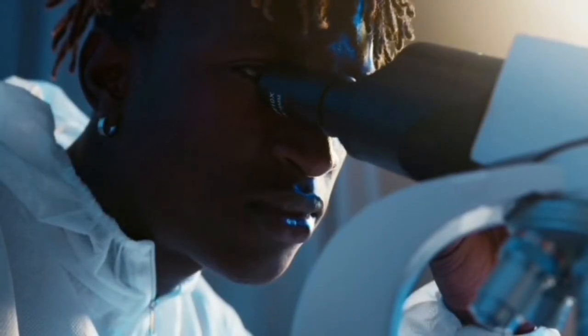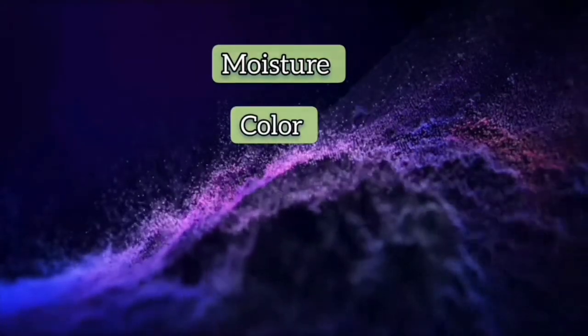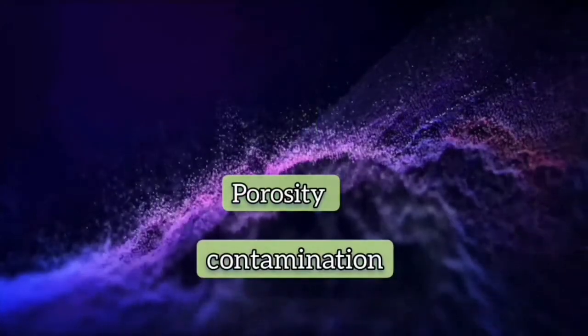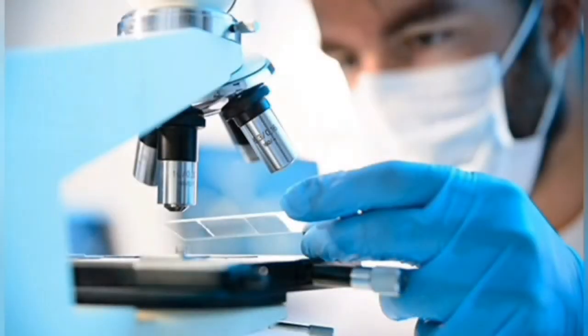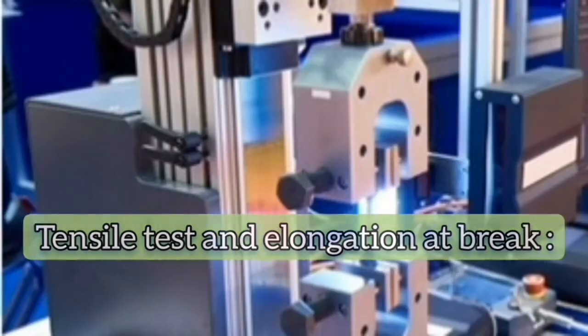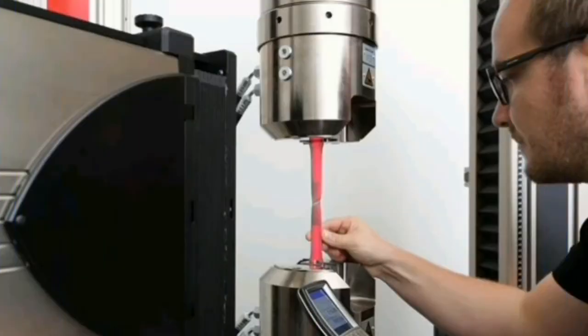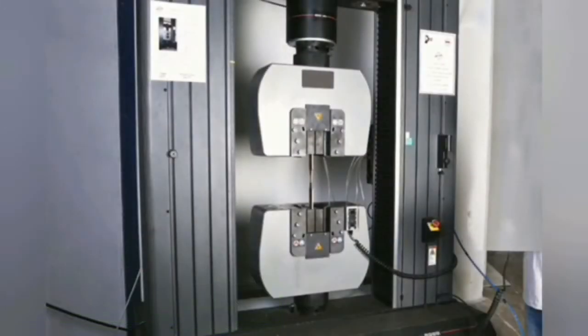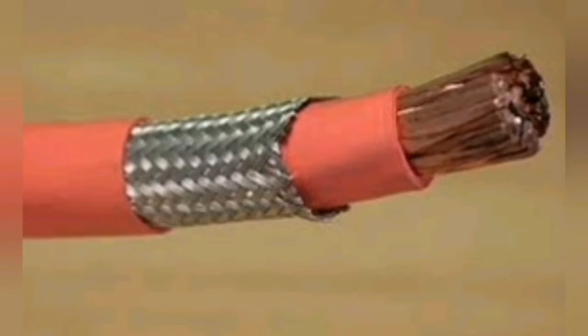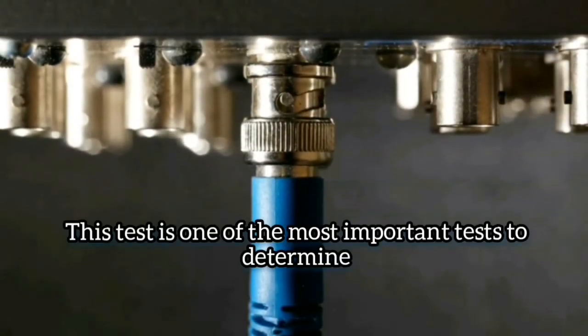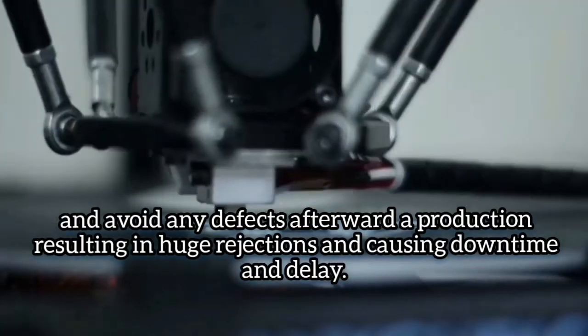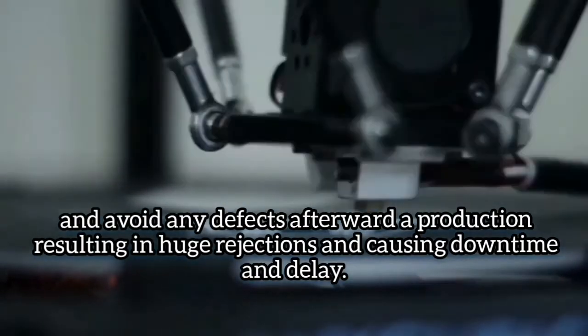Visual aspects such as moisture, color, porosity, contamination and granules size consistency using our microscope. Tensile strength and elongation at break: and at last but not the least, tensile test machines are used for evaluating the strength and elongation properties of plastics. This test is one of the most important tests to determine and avoid any defects after world production resulting in huge rejections and causing downtime and delay.